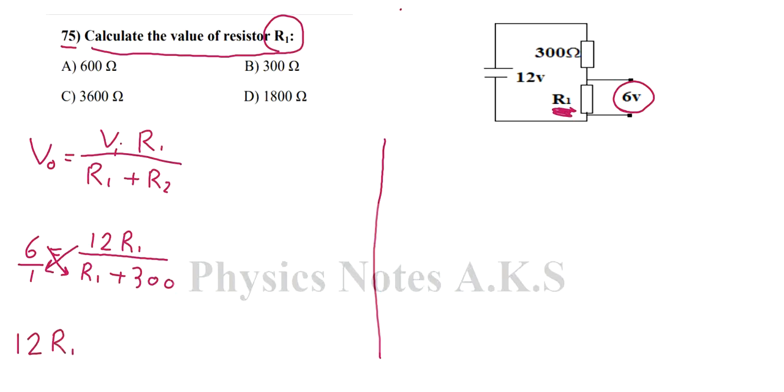And then the 6 will multiply R1 plus 300, so it's going to be 6 R1 plus 6 multiplied by 300, which is 1800.